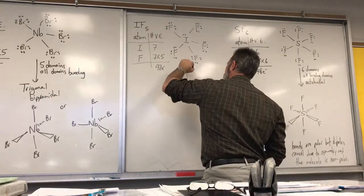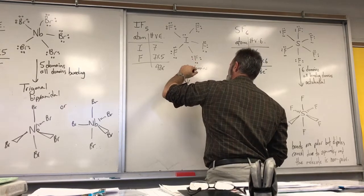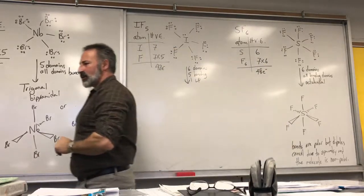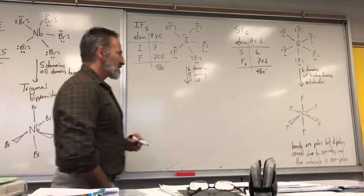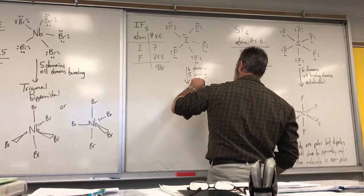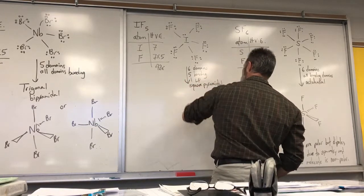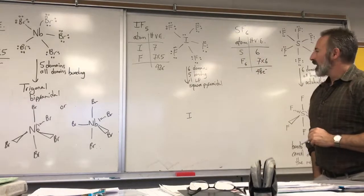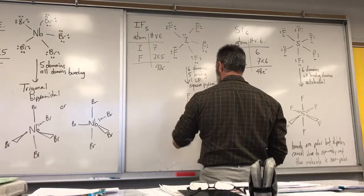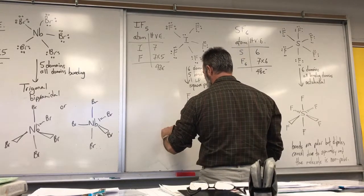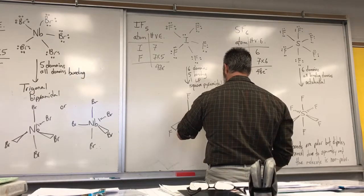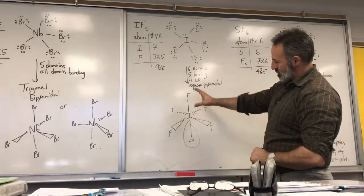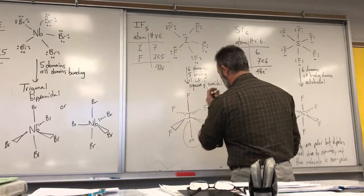That's six domains — five bonding and one lone pair. What does that give you? Square pyramidal, or square-based pyramid. Drawing it with the iodine in the middle, the five fluorine atoms arranged with one at the top of the pyramid, two coming out at you, and two going behind, then placing the lone pair at the bottom — you can see it suggests a pyramid shape, and if you were to draw lines between the fluorine atoms it would look like a square-based pyramid.